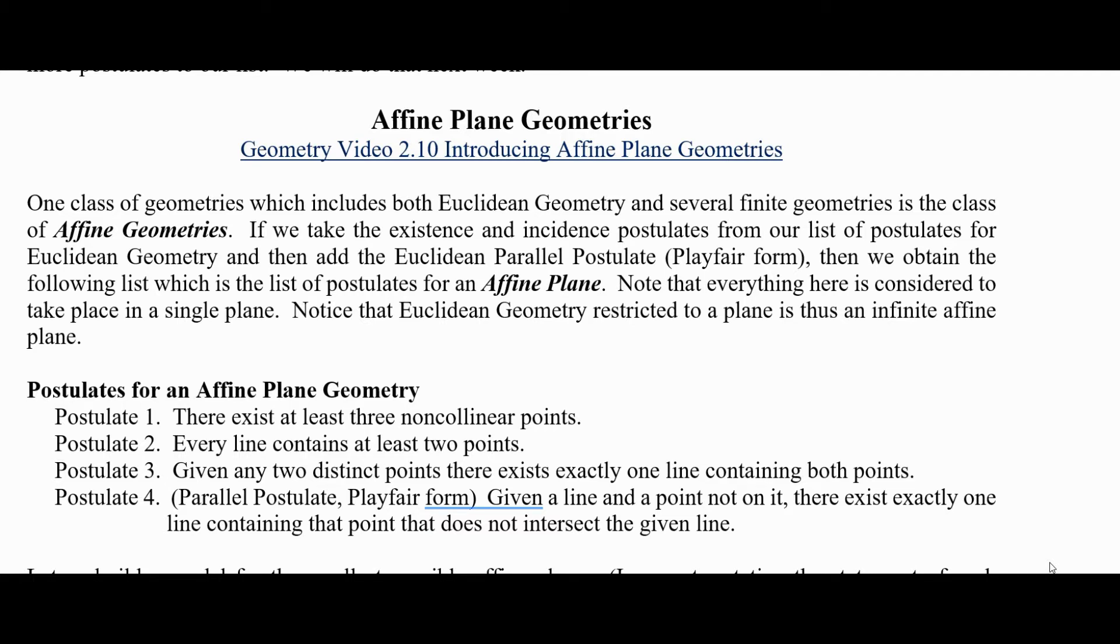One class of geometries that includes both Euclidean geometry and several finite geometries is the class of affine geometries. If we take the existence and incidence postulates from our list of postulates for Euclidean geometry and then add the Euclidean parallel postulate, we obtain the following list which is a list of postulates for an affine plane.